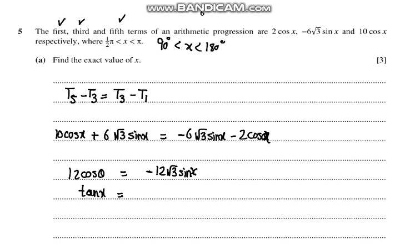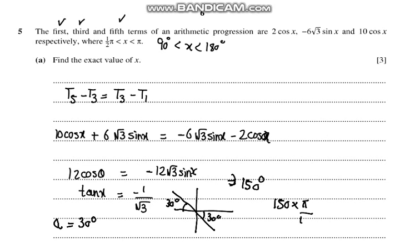So this would become tan(x) equals -1 over √3. The basic angle alpha is 30 degrees. So that would be 180 minus 30, which is 150 degrees.